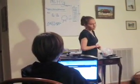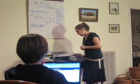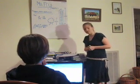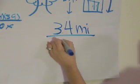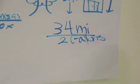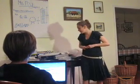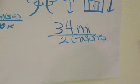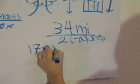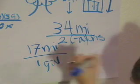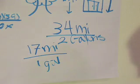So, again — rates, ratios, and proportions. First of all, rates: a ratio of two quantities with different units, such as thirty-four miles over two gallons. Rates are usually written as unit rates. A unit rate is a rate with a second quantity of one unit, such as seventeen miles over one gallon.